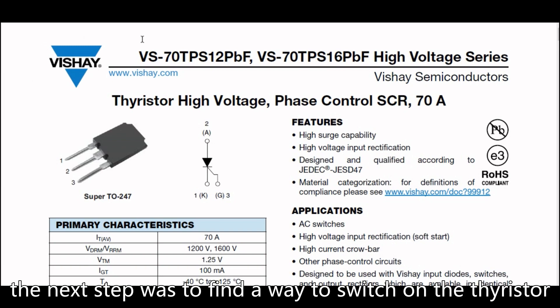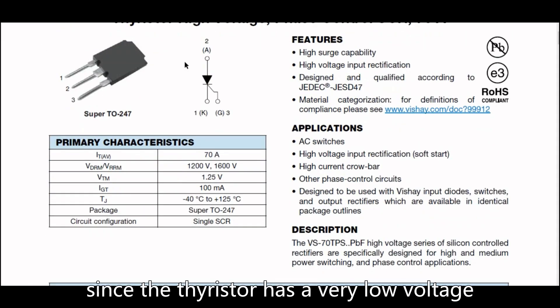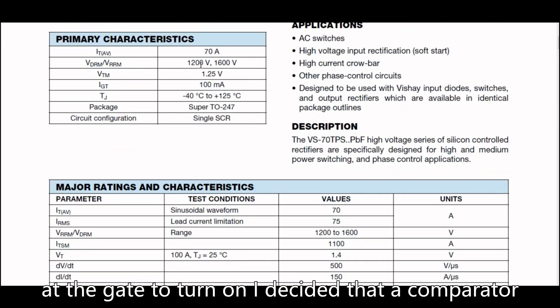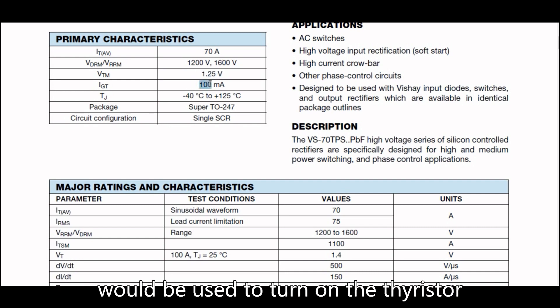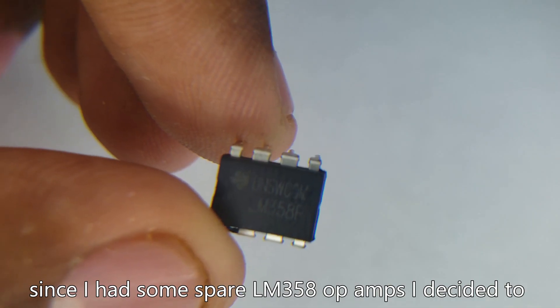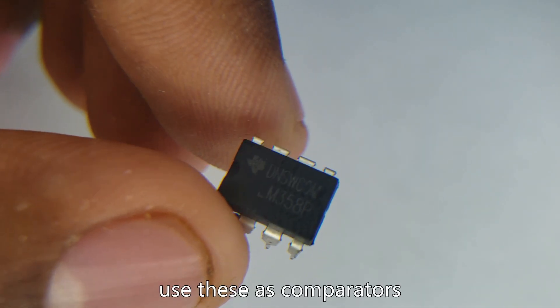The next step was to find a way to switch on the thyristor. Since the thyristor has very low voltage at the gate to turn on, I decided a comparator would be used to turn on the thyristor. Since I had some spare LM358 op amps I decided to use these as comparators.